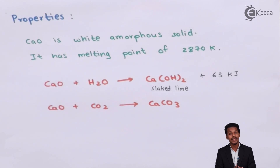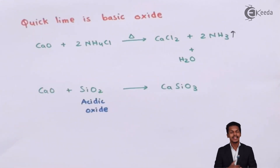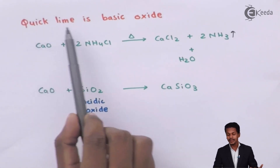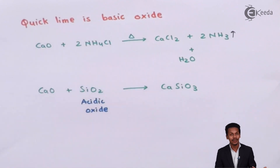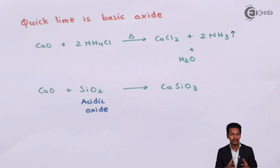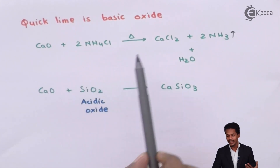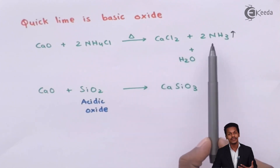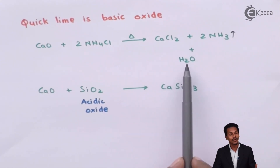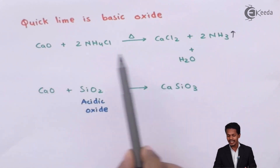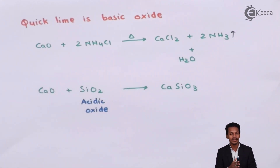Quick lime is basic in nature — it is a basic oxide — so it can easily react with acidic oxides. One reaction: when calcium oxide is treated with two moles of ammonium chloride and heated, we get CaCl2 (calcium chloride) along with the evolution of ammonia gas and water. This is also how we can prepare calcium chloride.